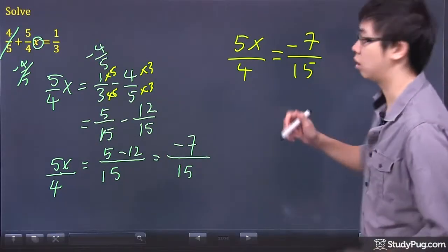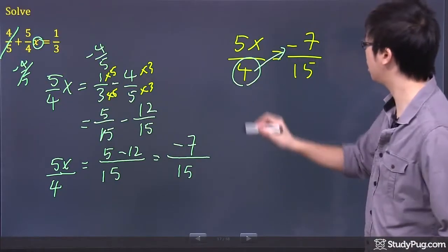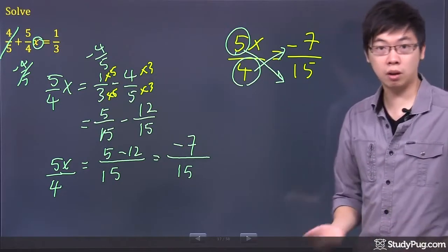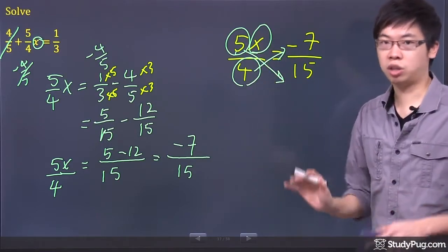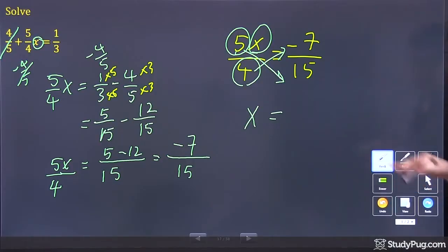So I will actually now take the cross-multiplying method. I'll take the 4 and multiply it to the negative 7 and take the 5 and multiply it down to the 15. Why do I do that? I want to keep the x by itself on the top. So now the x is on the top by itself. It's alone, but that's what we want.